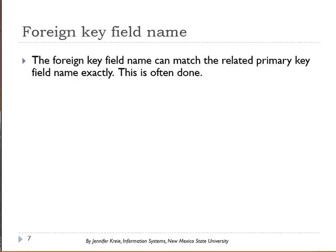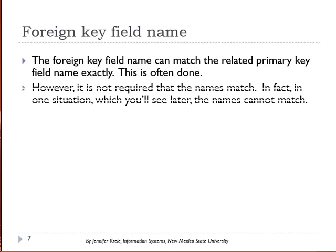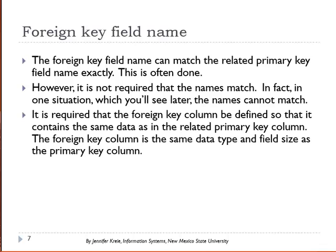The foreign key field name can match exactly the related primary key field name, and that's often what you see. However, it's not required that the names match. What has to match in a primary key column related to a foreign key column is that the data type is the same. So the foreign key column is the same data type and field size as its related primary key column. There are a couple of situations where you cannot match the primary key and the foreign key field names, and you'll see those in later examples.